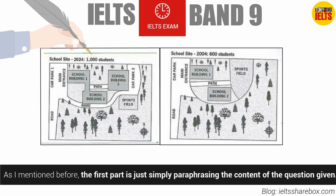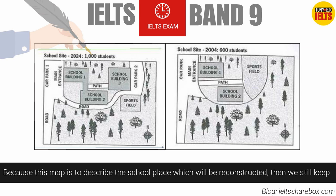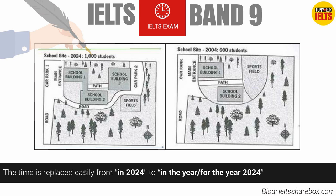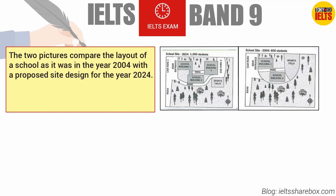The first part is simply paraphrasing the content of the given question. The word 'diagrams' can be specified as 'two maps' or 'two pictures.' In this case, 'two pictures' is preferred. Since this map describes a school place that will be reconstructed, we keep the word 'site' and add 'layout' to describe the school overall. The time is replaced from 'in 2024' to 'for the year 2024.' So the introduction should be: 'The two pictures compare the layout of a school as it was in the year 2004 with a proposed site design for the year 2024.'